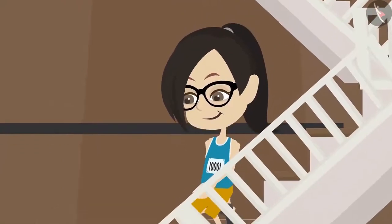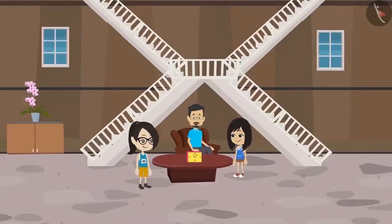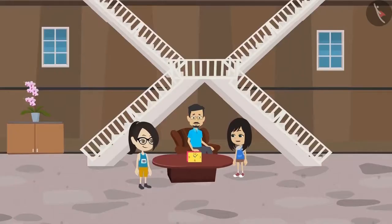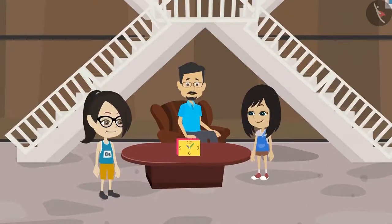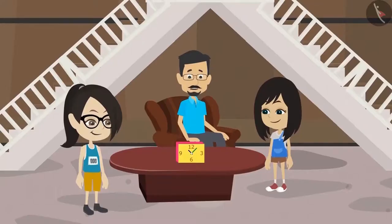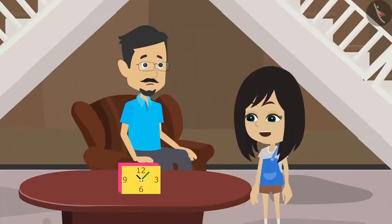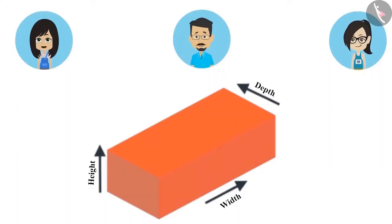We live in a 3D world. All the objects around us are 3D. The meaning of 3D is three-dimensional, which means that every object has 3 dimensions — width, height, and depth. We had learned this while learning about bricks; to measure bricks, we used 3 dimensions. And because of these 3 dimensions, an object appears to have different shapes when viewed from different sides.